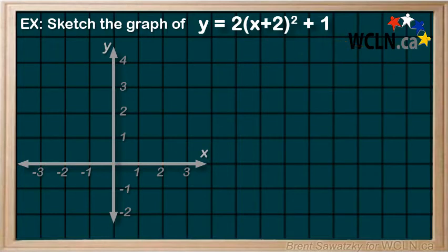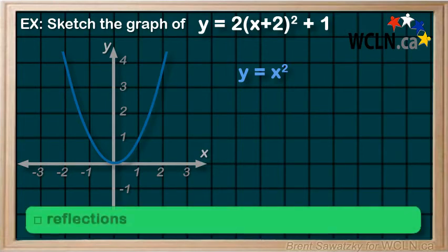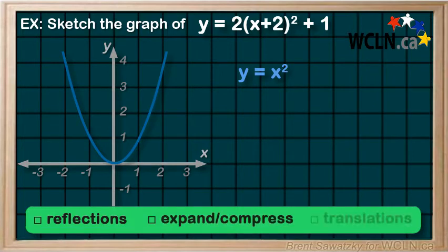So we'll start with our basic quadratic. Next we'll look at our order of transformations. We start with reflections, and then expansions and compressions, and finally translations.